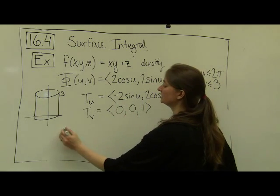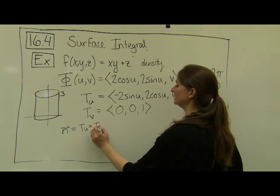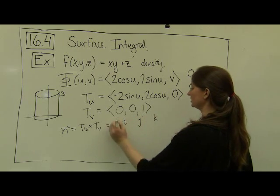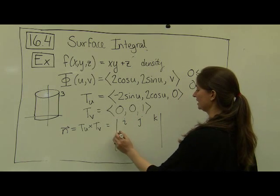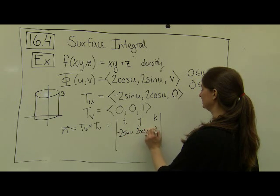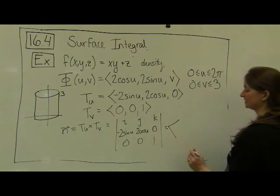And when I compute the cross product, N, which is equal to the cross product of Tu and Tv, that's going to be equal to the determinant of the matrix, i j k, negative 2 sine u, 2 cosine u, 0, 0, 0, 1. This is where I made the error last time.